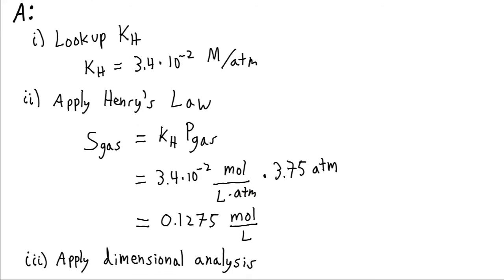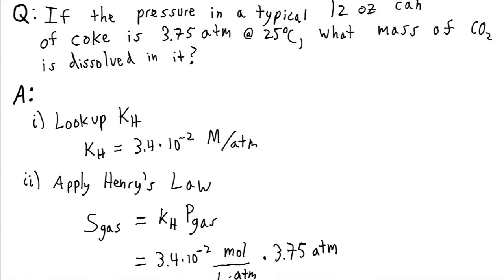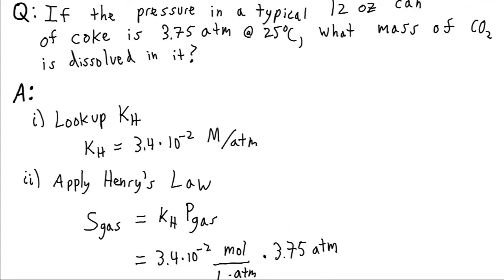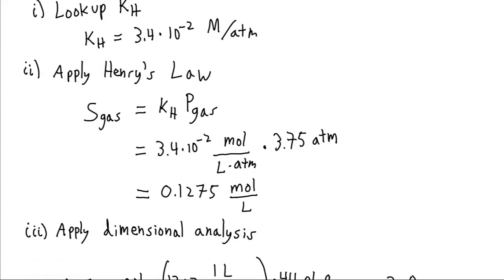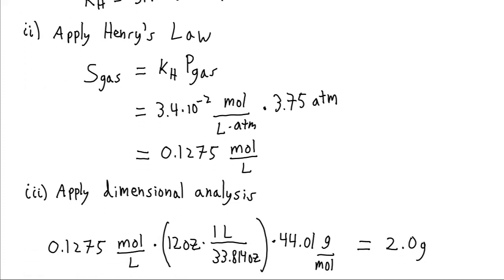And now we can apply dimensional analysis to get this moles per liter into grams, because we were asked for the mass of the carbon dioxide. So to get rid of moles, we can multiply by the molecular weight, the grams per mole of CO2. And this is concentration of CO2, so we can do that.